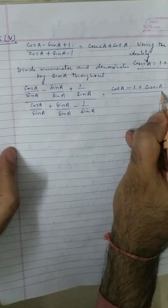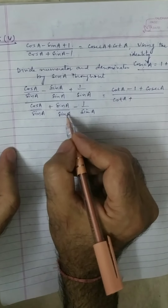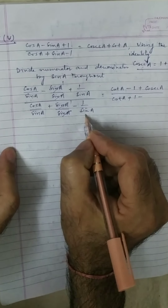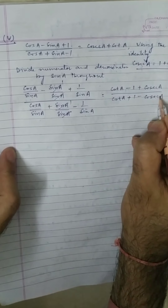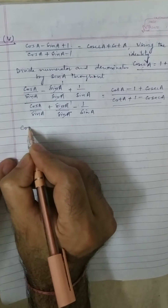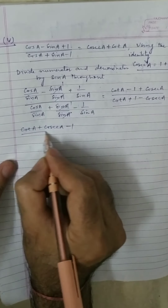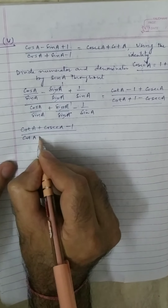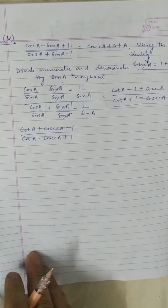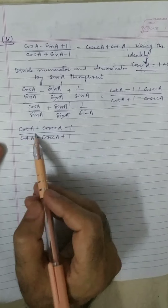After dividing numerator and denominator by sin a: cos a upon sin a minus sin a upon sin a plus 1 upon sin a, divided by cos a upon sin a plus sin a upon sin a minus 1 upon sin a. That equals cot a minus 1 plus cosecant a upon cot a plus 1 minus cosecant a. Now use the identity: cosecant square a equals 1 plus cot square a.